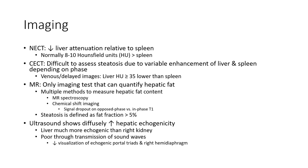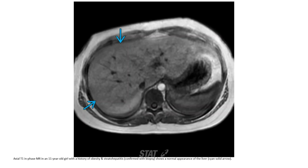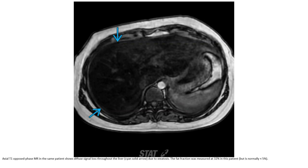On ultrasound, steatosis causes diffusely increased hepatic echogenicity compared to the kidney, with poor through-transmission of sound, decreased visualization of portal triads and the diaphragm. A T1 in-phase and out-of-phase MRI case of an 11-year-old with obesity and steatohepatitis shows signal dropout throughout the liver on the out-of-phase sequence, consistent with steatosis.